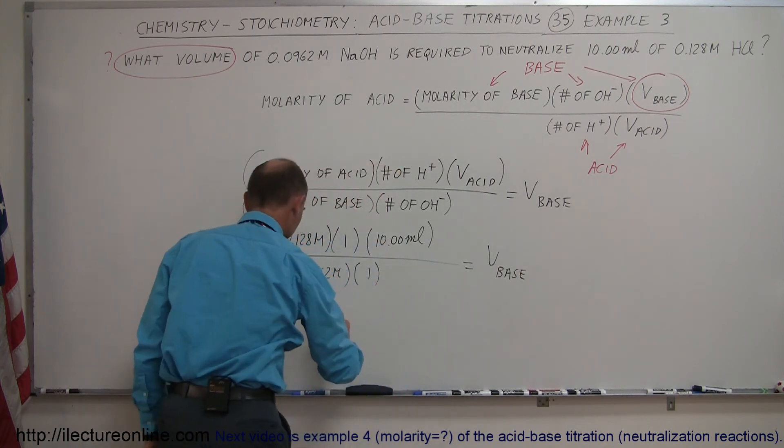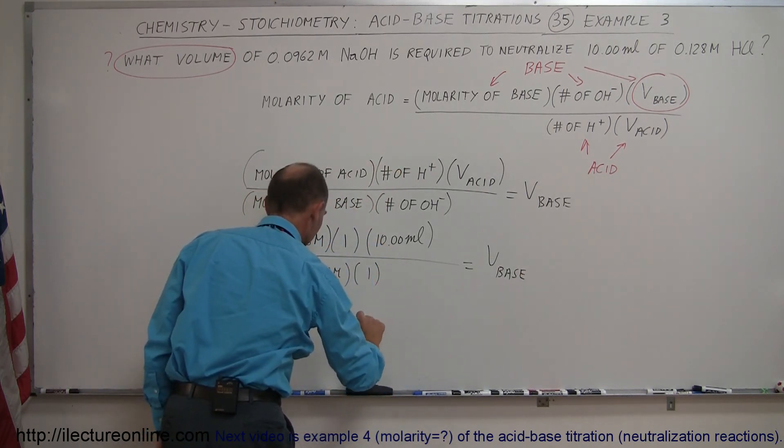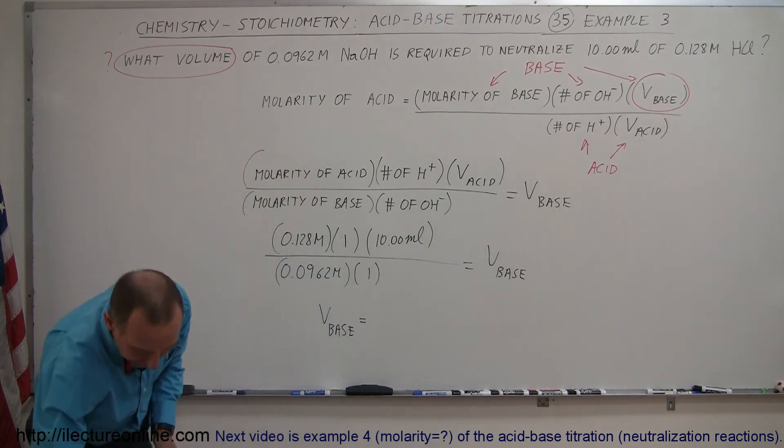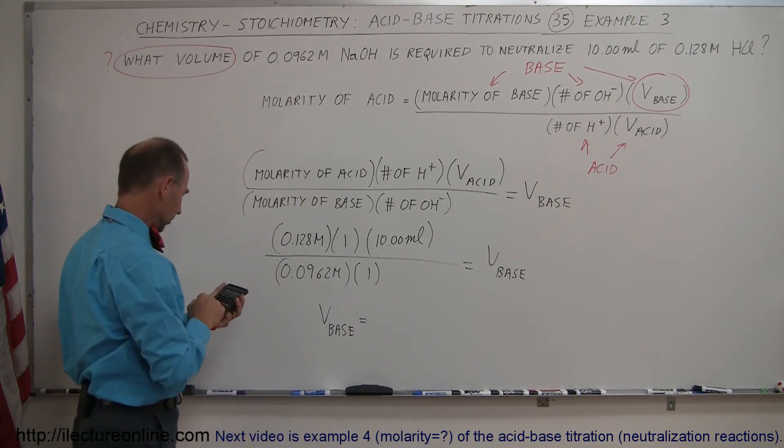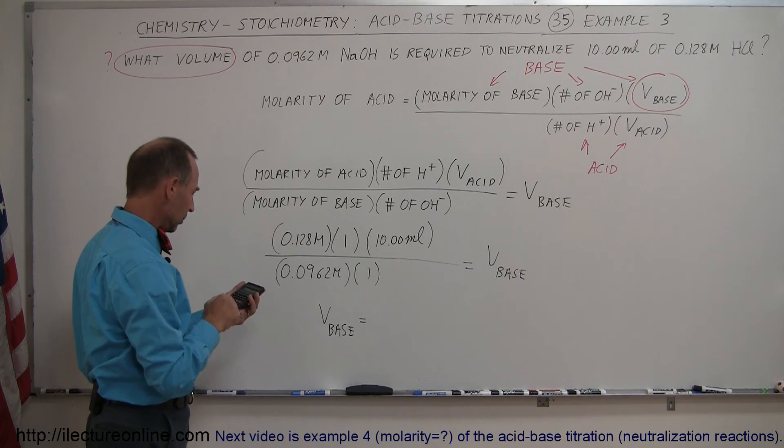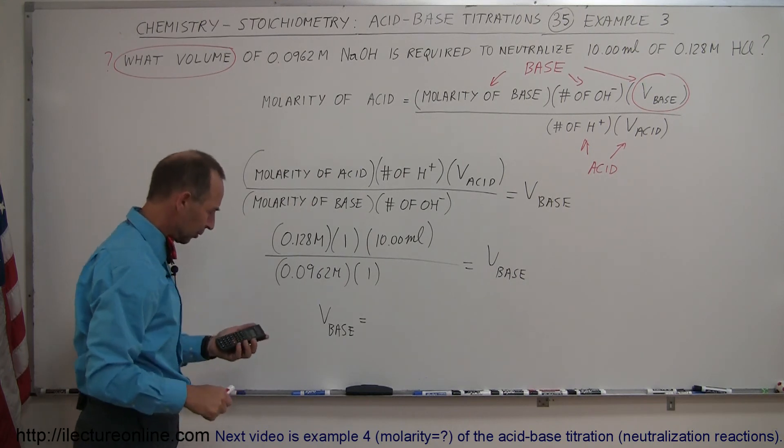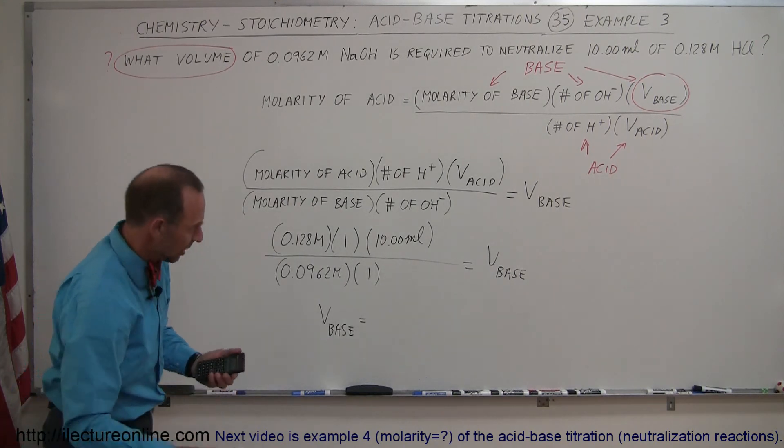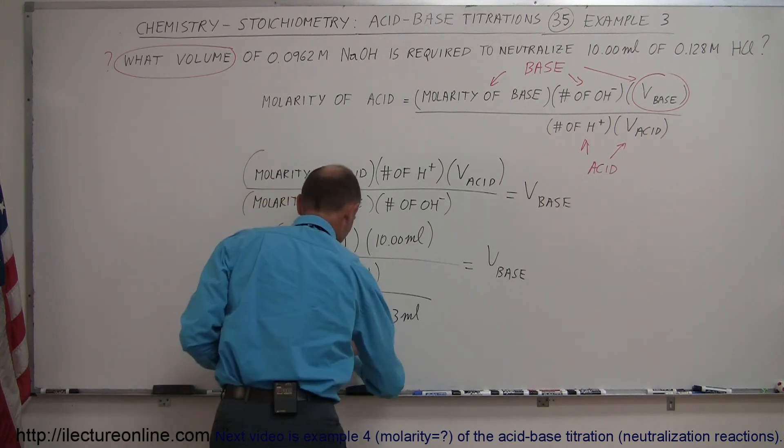Finally, when we crank all that out on the calculator, the volume of the base will be equal to—so we take 0.128 times 10 divided by 0.0962 equals—and it looks like 13.3 milliliters.